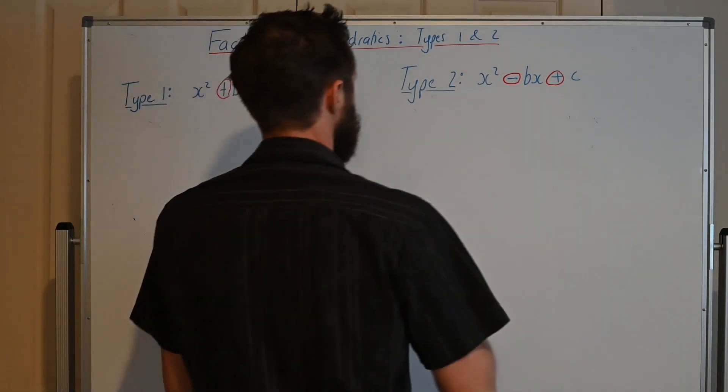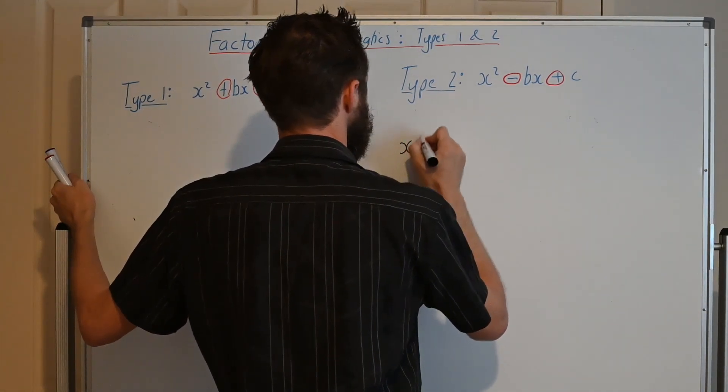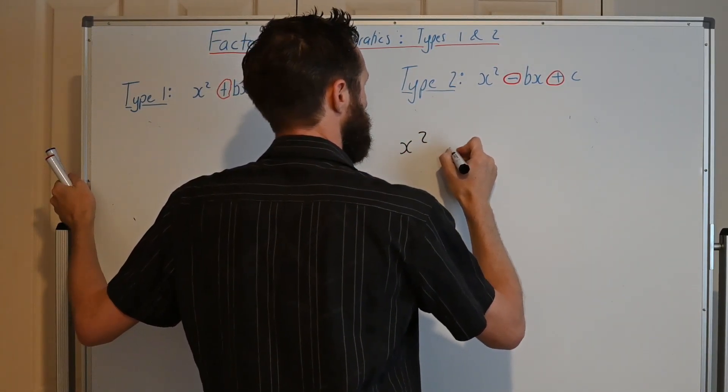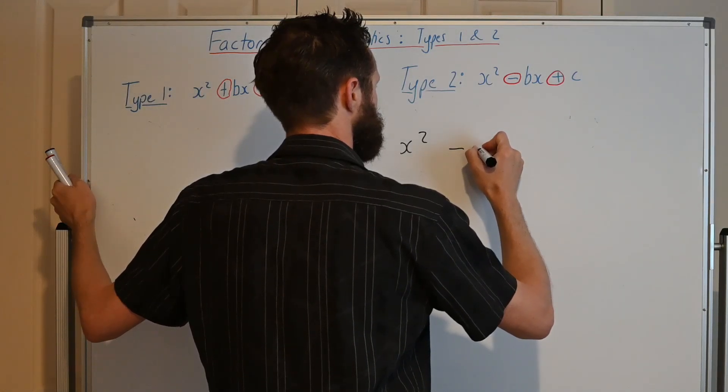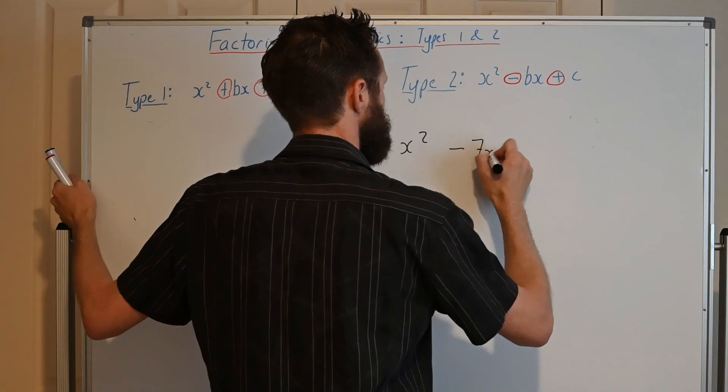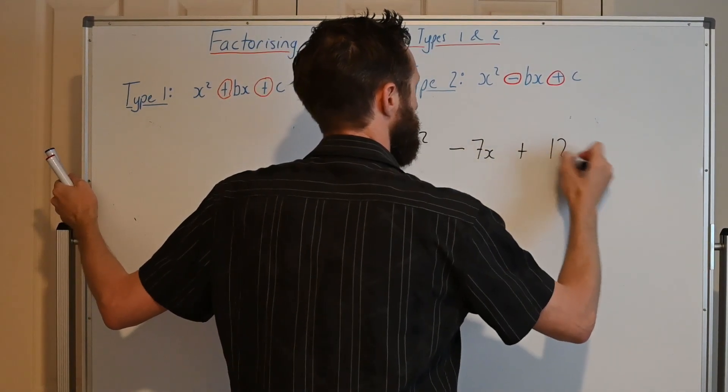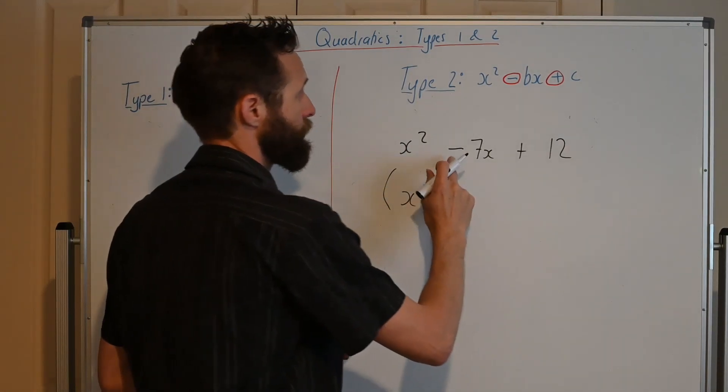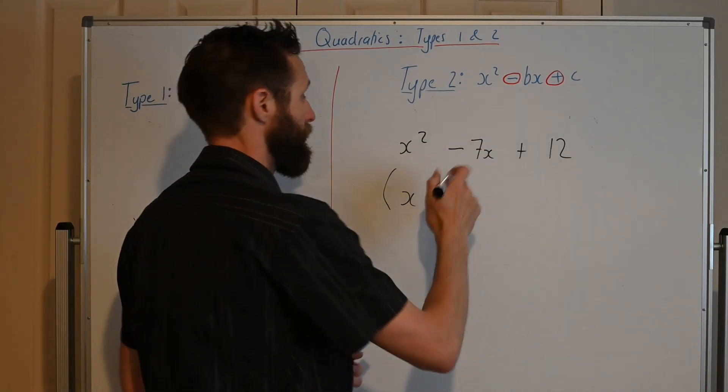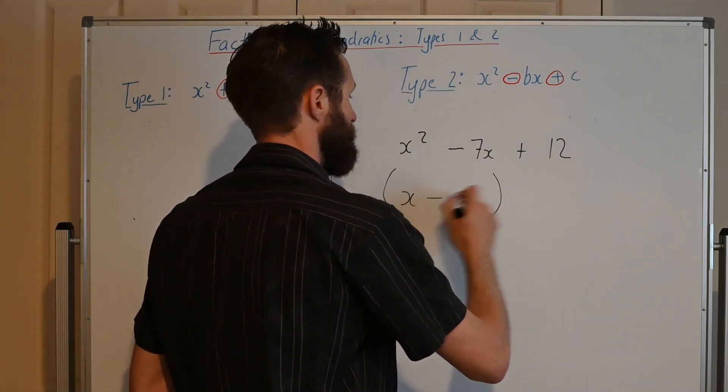Let's say we've got one that's like this, x² - 7x + 12. So we know because we've got a minus bx plus c that we're going to have two brackets with x minus in them.